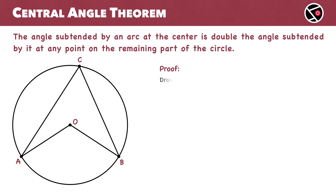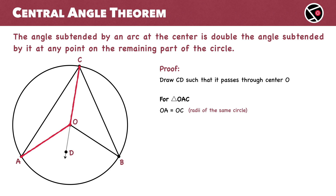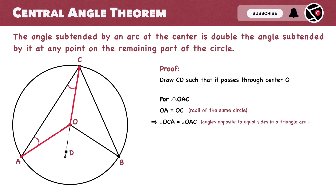First, draw ray CD such that it passes through center O. Next, let's consider triangle OAC. OA equals OC since they are both radii of the same circle. Angles opposite to equal sides in a triangle are equal, so angle OCA equals angle OAC. This is equation number 1.